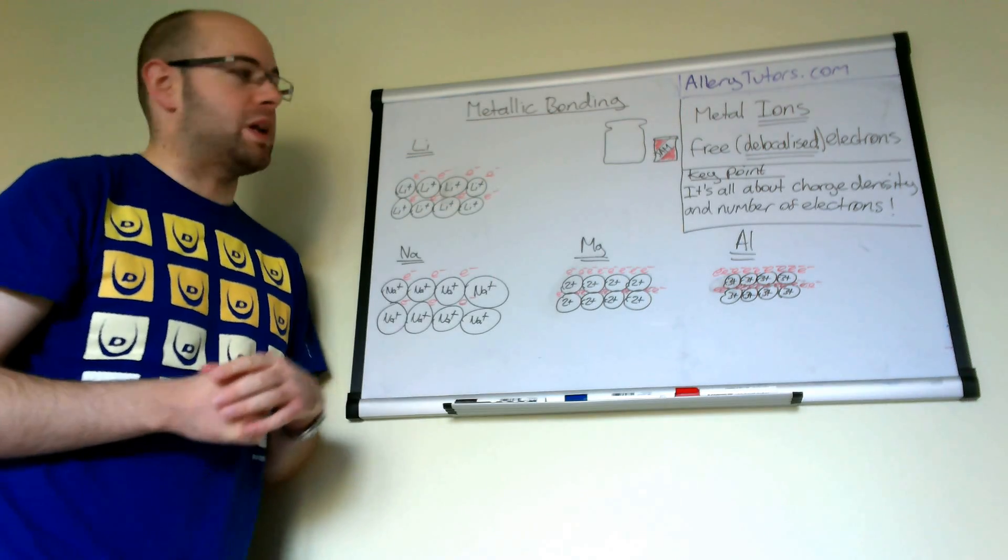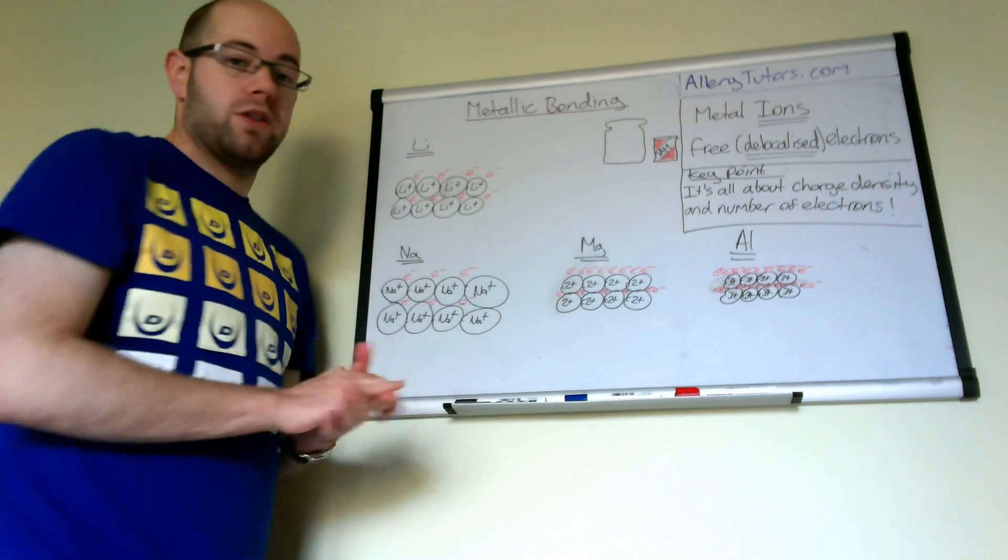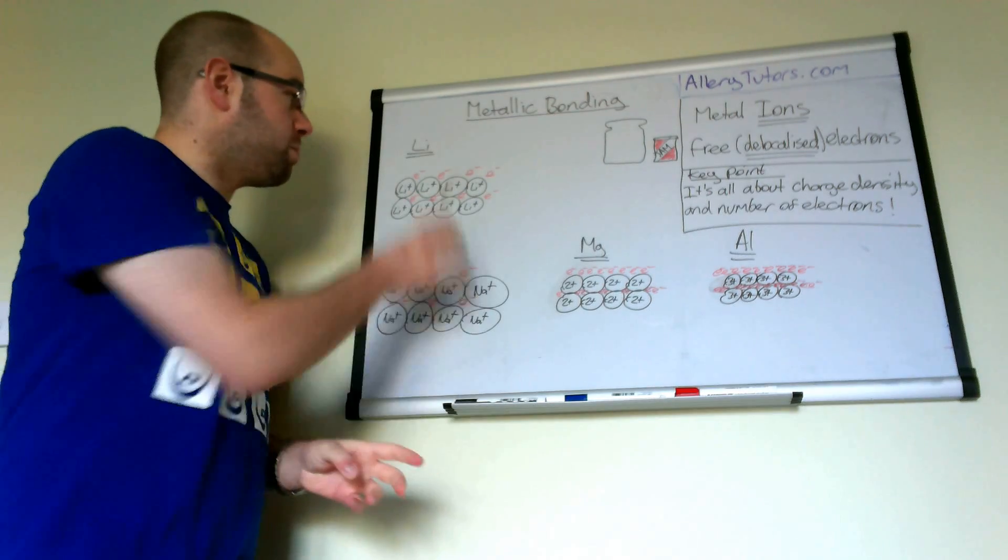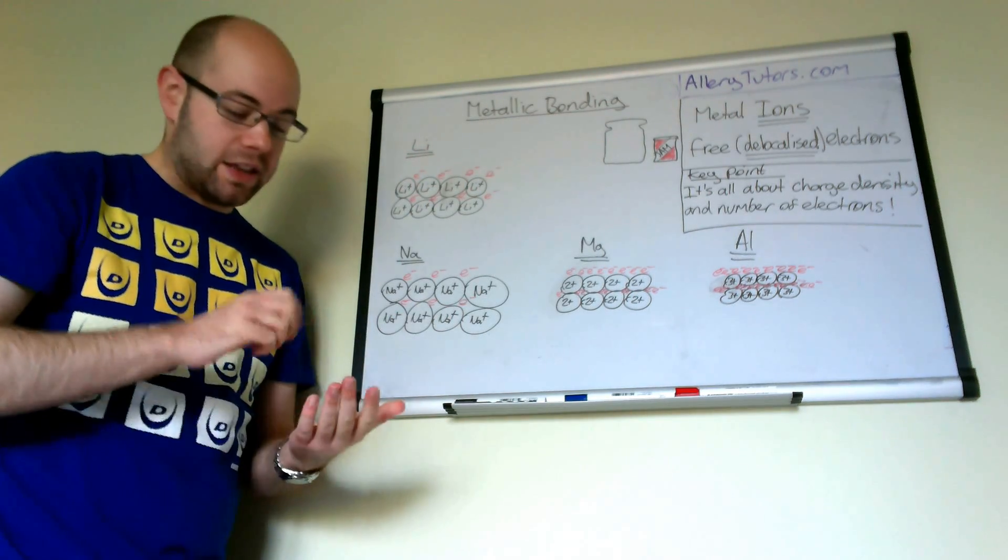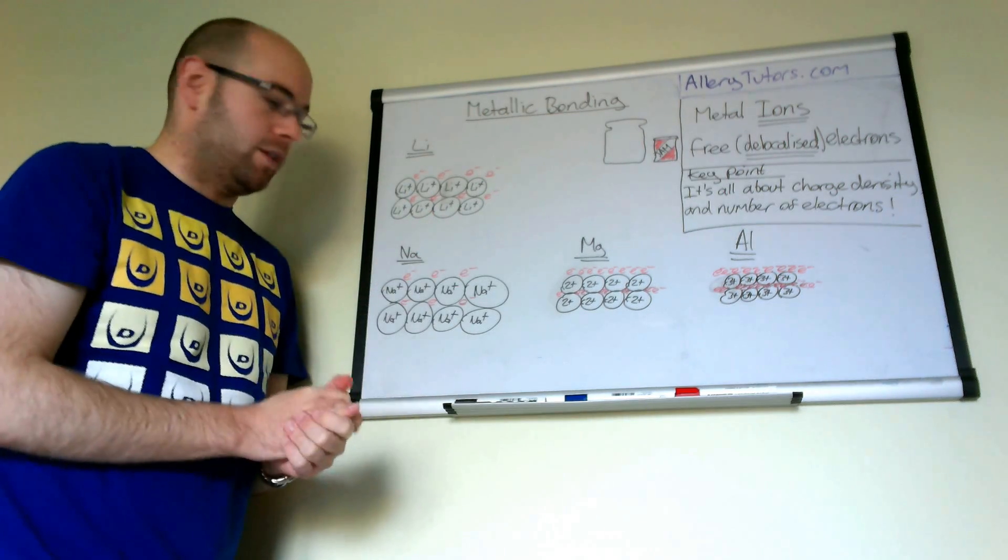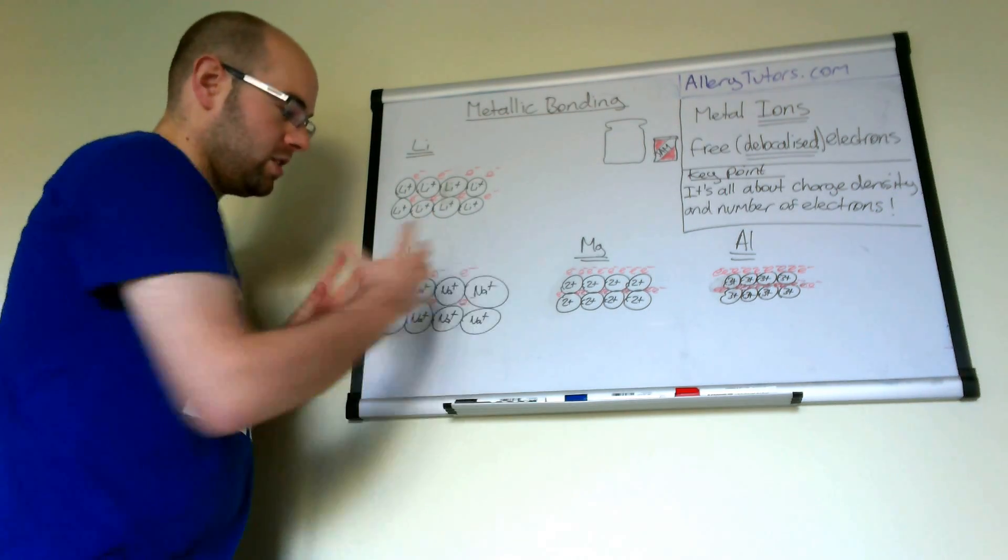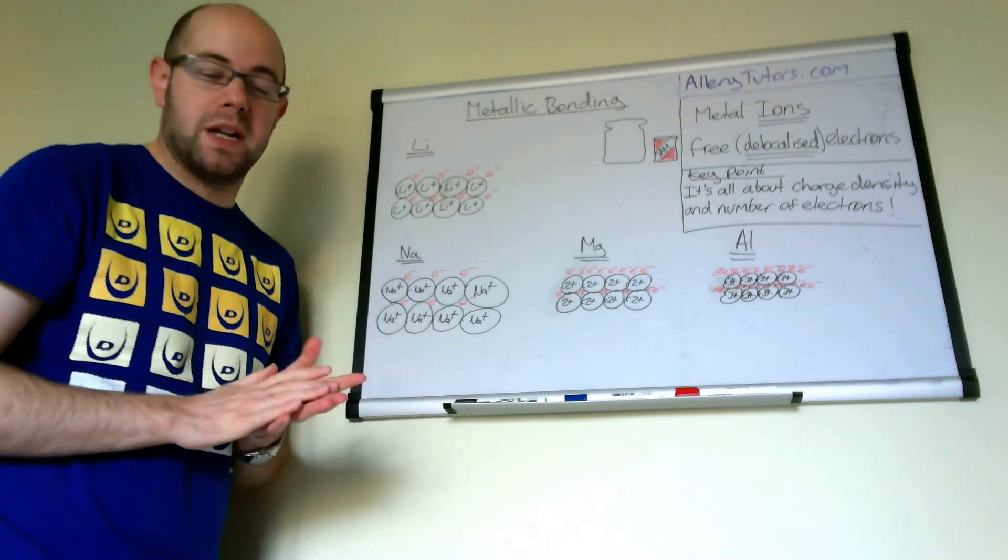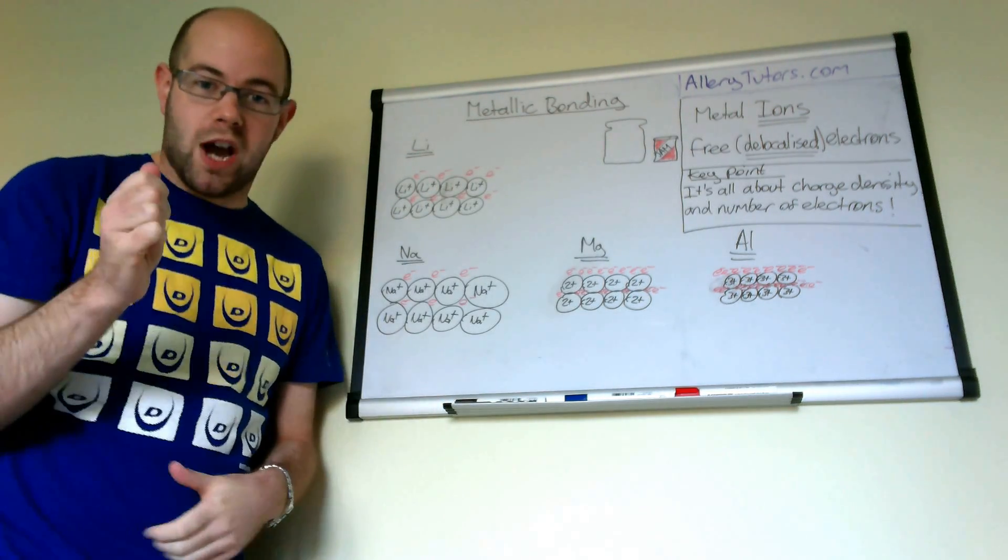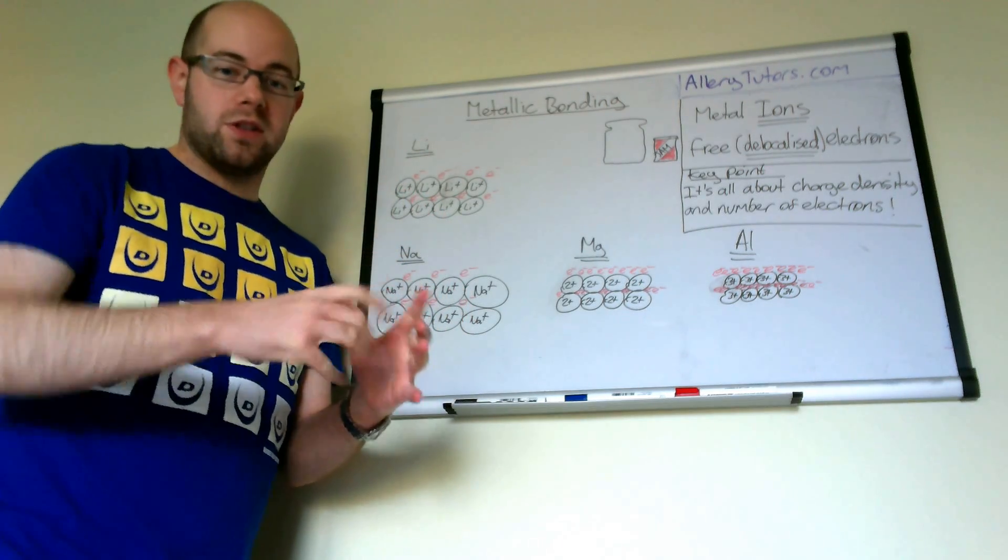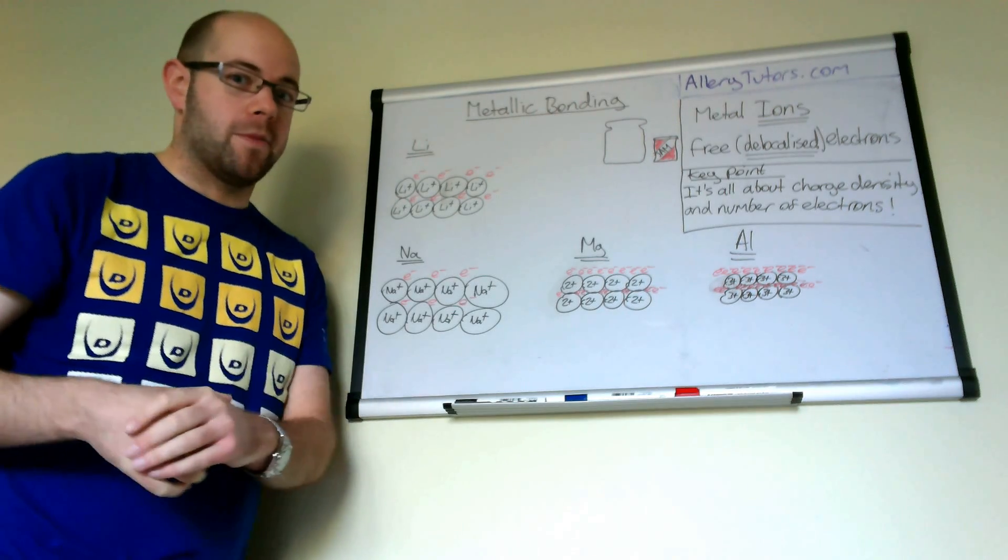Here's the analogy: imagine your electrons are like jam and your positive ions are like toast. Both elements can only give up so many electrons, so that's like the same amount of jam. But sodium ions are larger, their charge density is lower. That means it's like the same amount of jam, but with one small slice of toast you can cover it readily with a nice amount of jam.